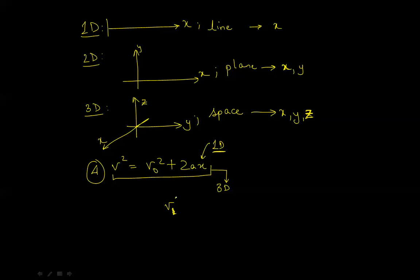Actually, it would actually be VP squared equal to VP naught squared plus 2A, P, where P can be X, Y, or Z.